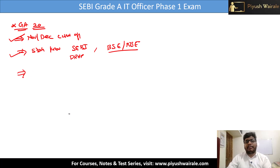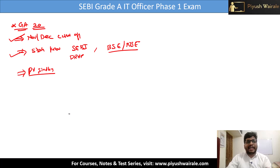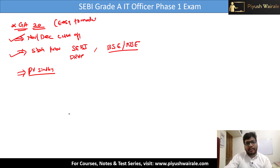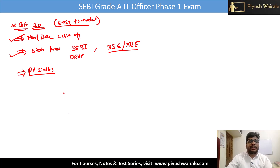There was one question about a badminton player — PV Sindhu was the answer. Simple questions like this were there. I can say the general awareness part is on the easier side — easy to moderate. If you have just gone through the last 2 months' current affairs, you can easily attempt 10 to 12 questions here.